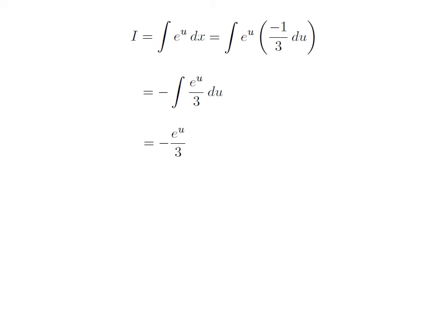This is a simple integration, so i is equal to minus 1 upon 3 into e to the power u. We had solved the integration in terms of u. Now we need to take back the expression in terms of x. For that, I have replaced u by minus 3x, which we had assumed earlier. So integral i is equal to minus e to the power minus 3x divided by 3.